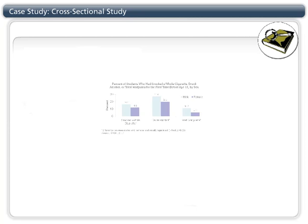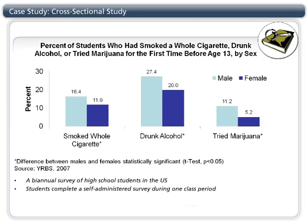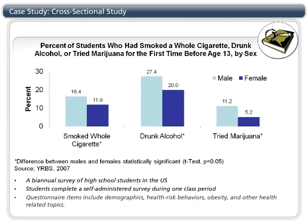Here is an example of a cross-sectional design in action: the YRBS survey. The Youth Risk Behavior Survey is a biannual survey of high school students in the United States. During one class period, students complete the survey, recording their responses directly on a computer scannable booklet or answer sheet. The survey includes almost 100 items assessing demographics, health risk behaviors, obesity, and other health-related topics. The graph here presents results from the 2007 survey regarding drug use before age 13 years, stratified by sex.